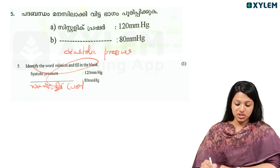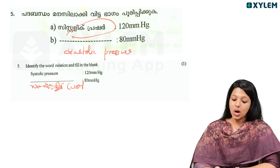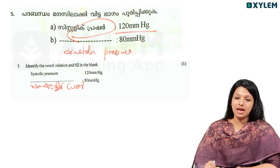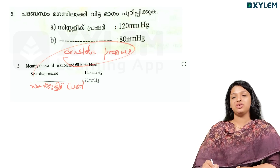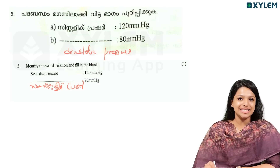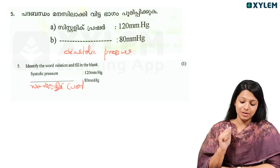Identify the word relation and fill in the blanks. Systolic pressure: 120 mmHg. Diastolic pressure: 80 mmHg.